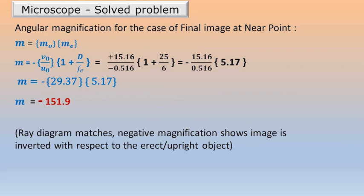We now come to the last part of the problem, that is finding the angular magnification M. M is equal to M O into M E. That is, the magnification due to the objective lens multiplied by the magnification due to the eyepiece. The M O is nothing but VO divided by U O with a minus sign because the object and image are on opposite sides of the convex lens. M E is 1 plus D by F E for the specific case where the final image is formed at the near point at distance D. Plugging in the values with the correct sign convention, we will get M as minus 151.9. This is the answer. The minus sign shows the image is formed on the same side as the object.